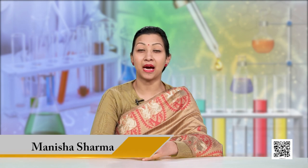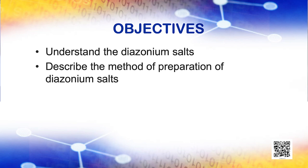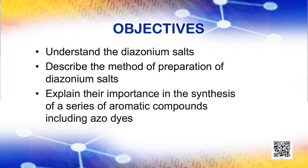Dear learners of class 12th, today we are going to discuss chapter 13 Amines part 4. After this discussion, you will be able to understand the diazonium salts, describe the method of preparation of diazonium salts, and explain their importance in the synthesis of a series of aromatic compounds including azo dyes.